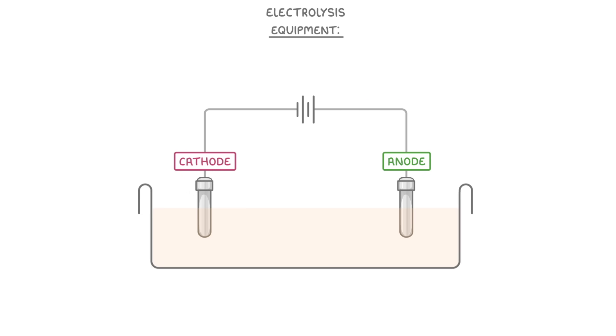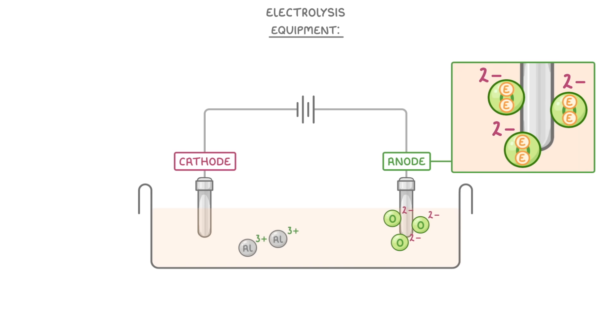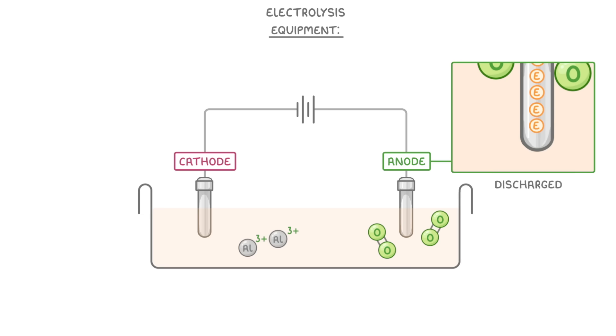If we take a closer look at our electrolyte of molten aluminum oxide, there will be oxygen two minus ions, and aluminum three plus ions. Because they're negative, the oxygen two minus ions will be attracted to the positive anode on the right, where they'll transfer their two extra electrons to the anode, and be discharged to oxygen atoms, at which point each pair can combine to form an oxygen molecule and float off into the air.